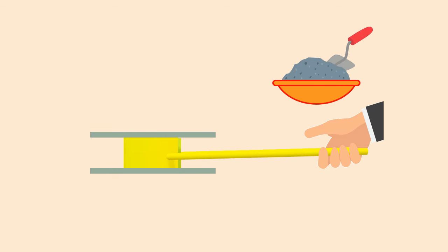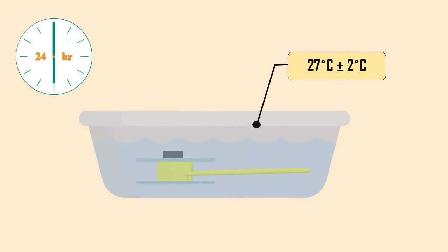Cover the mold with another piece of glass plate and place the small weight over the cover plate. Immerse the entire assembly in water at a temperature of 27 degrees Celsius, plus or minus two degrees Celsius for 24 hours.